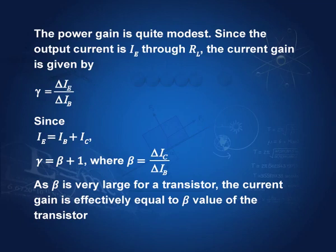Since the output current is I_E through R_L, the current gain is given by gamma equals delta I_E by delta I_B, because the output is collected across the emitter. And I_E equals I_B plus I_C, given by Kirchhoff's law. Therefore, I can get gamma equal to beta plus 1. Dividing by delta I_B: delta I_E by delta I_B is gamma, delta I_B by delta I_B is 1, and delta I_C by delta I_B is beta — so it is beta plus 1. As beta is very large for a transistor, the current gain is effectively equal to beta. So the current gain is very high, but as the voltage gain is not much, therefore the power gain is also modest.